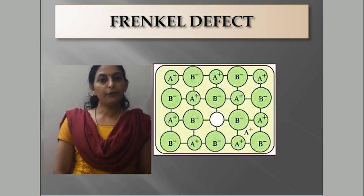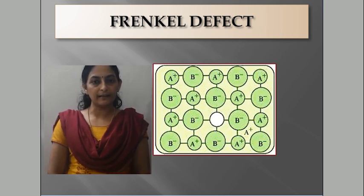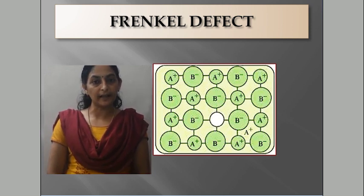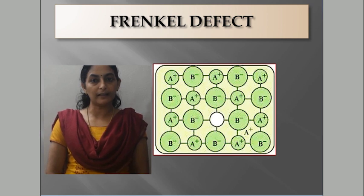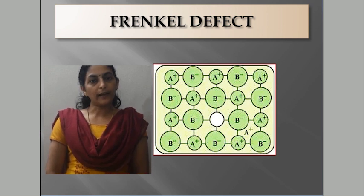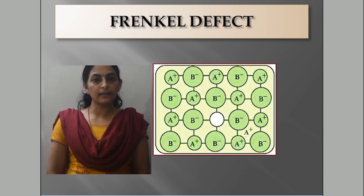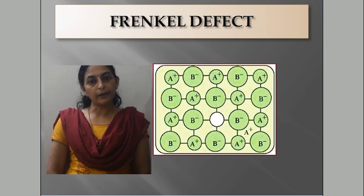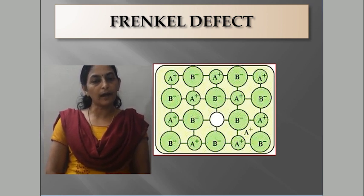If an ion is missing from its lattice site and occupies an interstitial site between the lattice points, such a defect is known as the Frenkel defect. The density of the crystal remains the same in a Frenkel defect, because the ion is not actually lost — it just moves to an interstitial site.